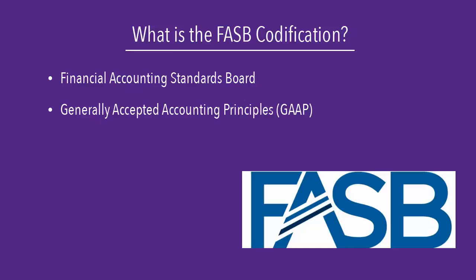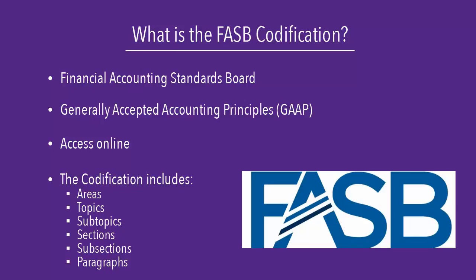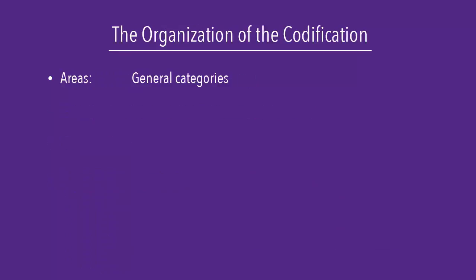Researchers can access the accounting principles online through the codification. The codification is organized by areas, topics, subtopics, sections, subsections, and paragraphs. Areas are general categories in which accounting principles are organized.